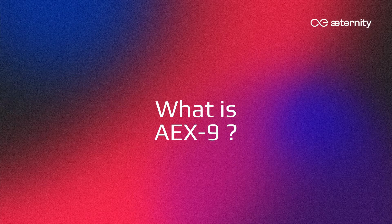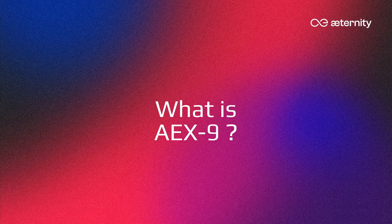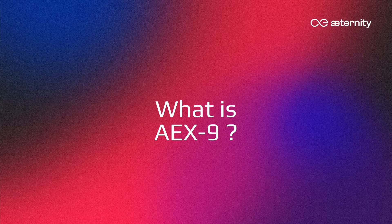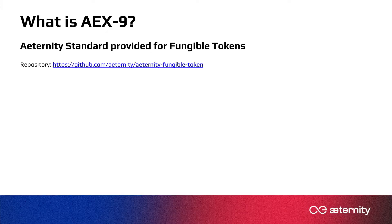What is AEX9? AEX9 is a proposed fungible token standard for Eternity. The goal for AEX9 was to build a simple token standard that is extensible and quite similar to the ERC20 specification on Ethereum, so that developers would already be familiar with the concepts and general structure of using this fungible token standard. Here I provide the link to the repository where you can find the documentation and reference implementation of the Eternity fungible token AEX9 smart contract.